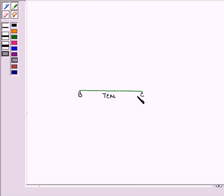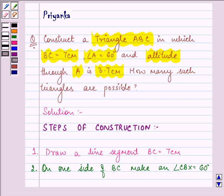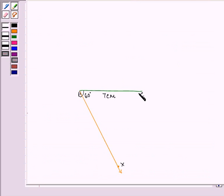Now, on one side of BC, we need to make an angle, let's say CBX equal to 60 degrees. And now we need to draw this. Now here we have drawn angle CBX equal to 60 degrees on one side of BC.